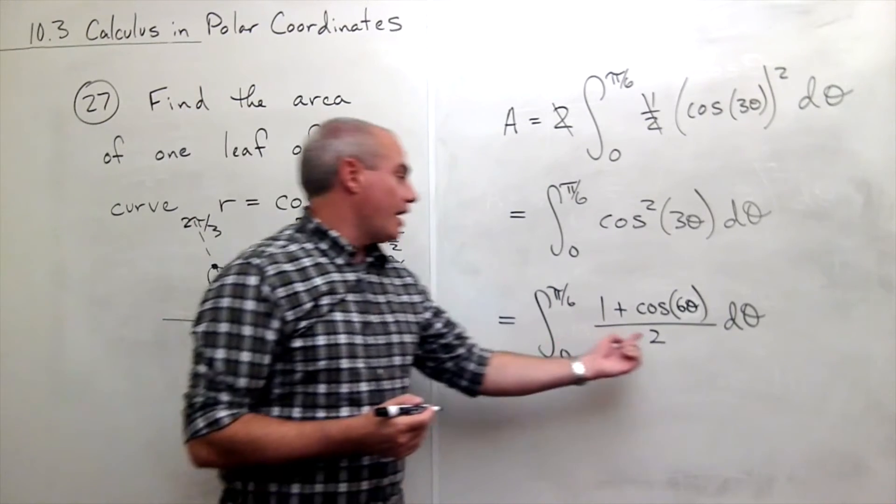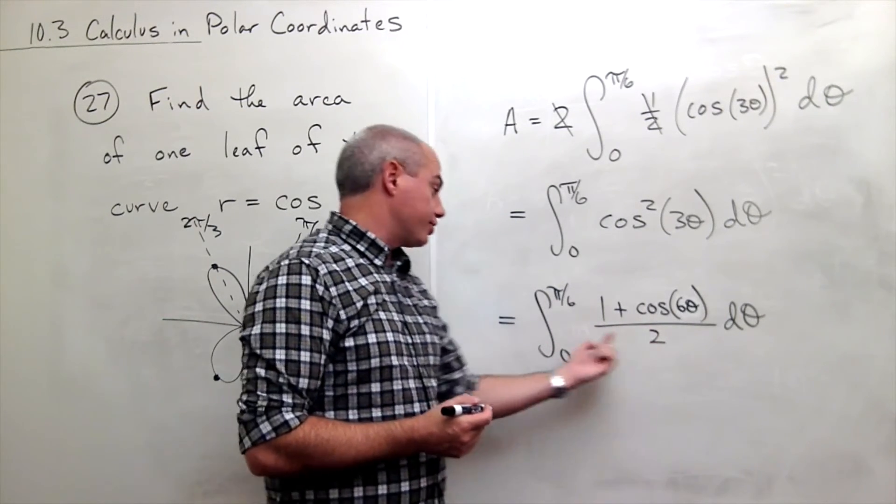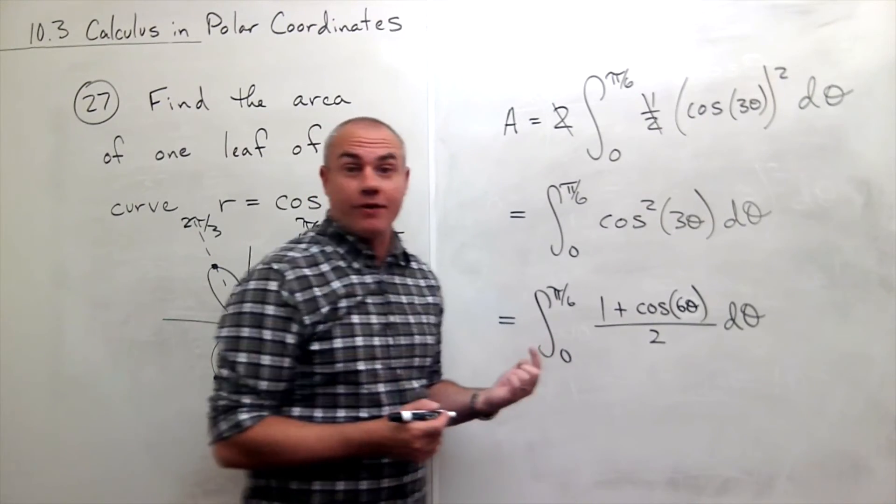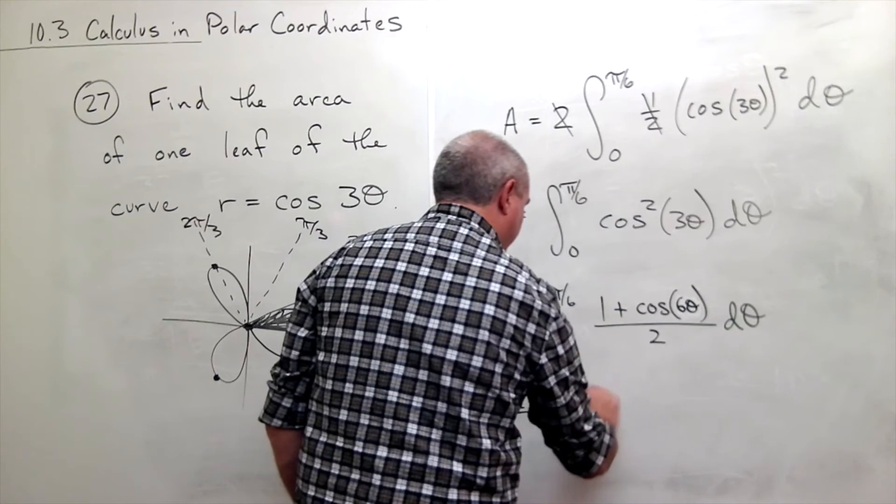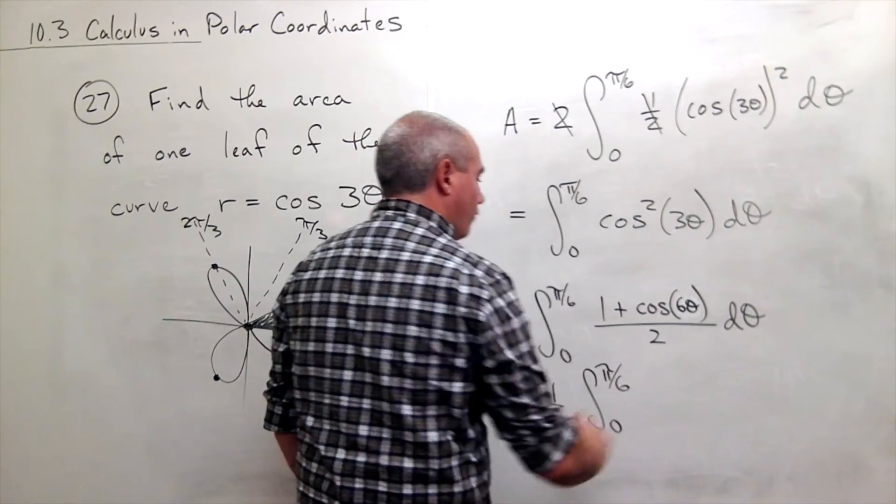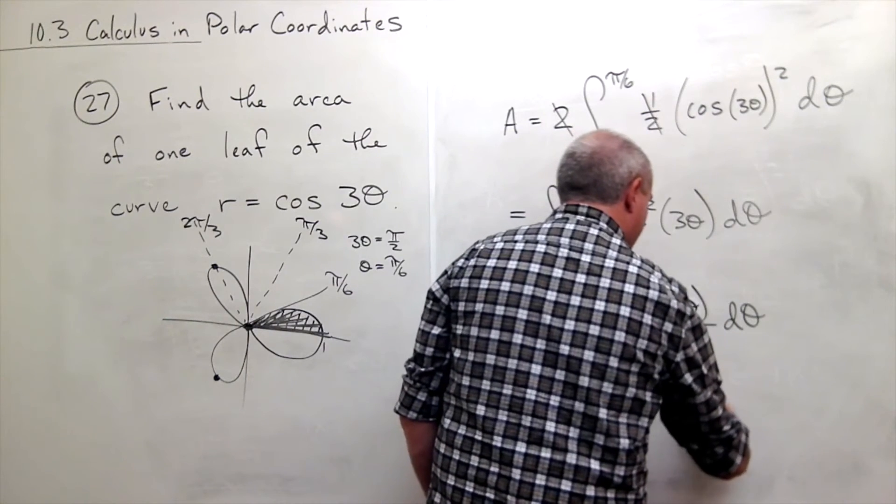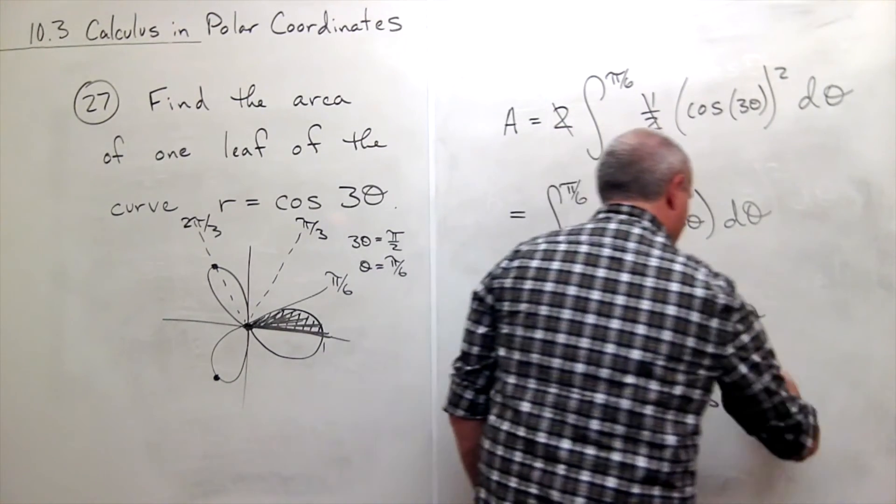All right now I see I have a one half or a two on the bottom of the fraction. I could pull the one half out of that integral and write it this way. I could write it as one half integral from zero to pi over six of one plus cosine of six theta d theta.